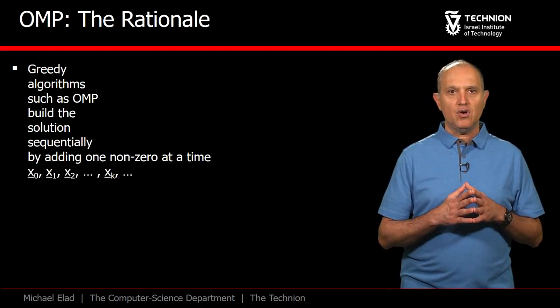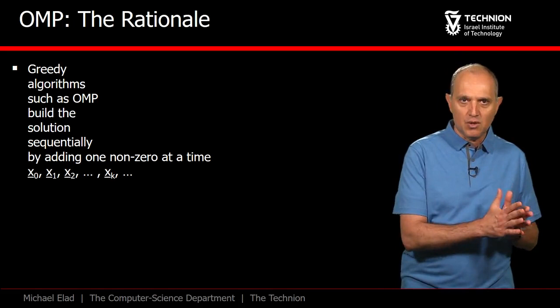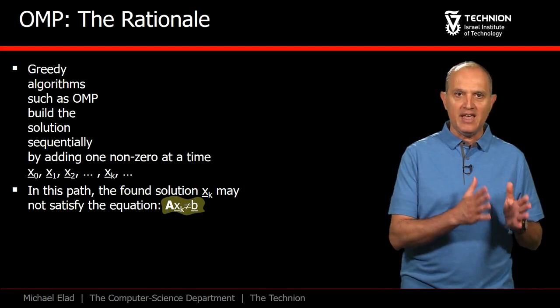Like all other greedy methods, the OMP generates series of solutions with gradually growing support. We denote these solutions as x0, x1, etc.